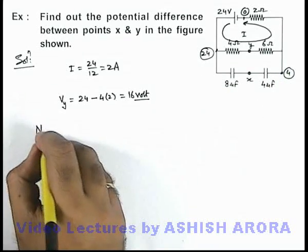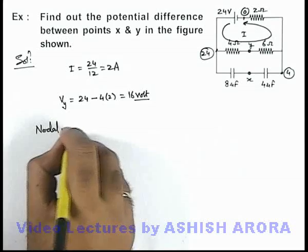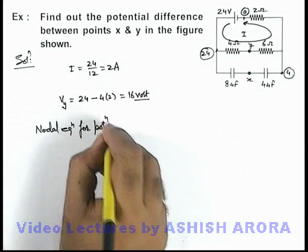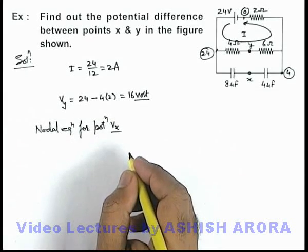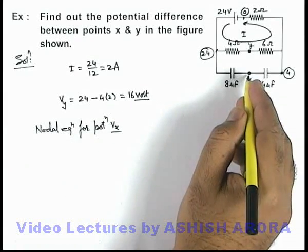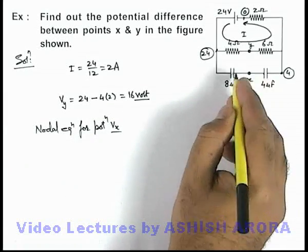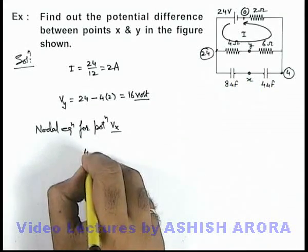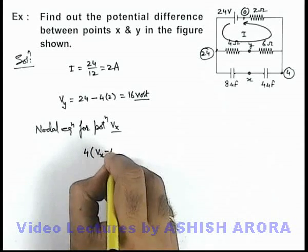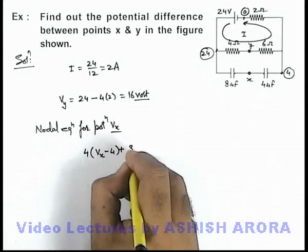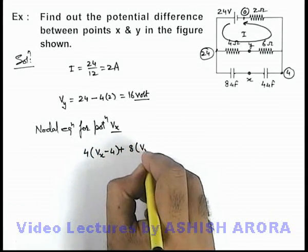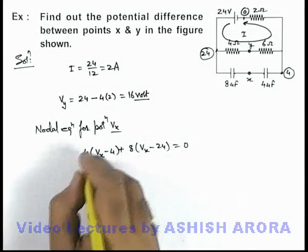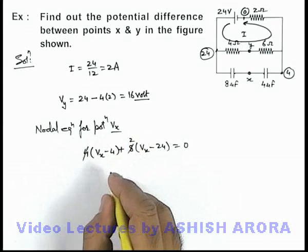So if we write nodal equation for potential Vx here, we can write in this situation, the sum of charges on these 2 plates must be equal to zero. So this can be written as 4 multiplied by Vx minus 4, plus 8 multiplied by Vx minus 24, this should be equal to zero. In this situation this 4 gets cancelled out.